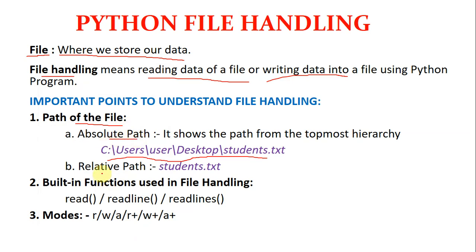There are two types of paths. One is absolute path and one is relative path. Absolute path shows the path from the topmost hierarchy — it shows the whole path: C drive, Users, User, Desktop, then the file. Relative path means just the name of the file and its extension. You will get deeper knowledge of these two later on.